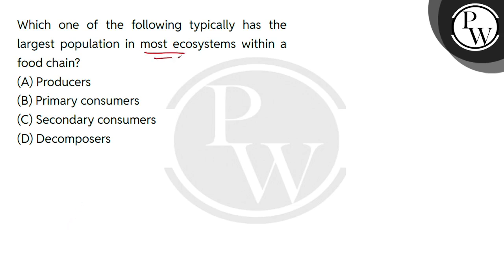So if we talk about the food chain, we have been asked about the largest population in most ecosystems. If we talk about any ecosystem, there will be the producers — there will be plants or autotrophs.